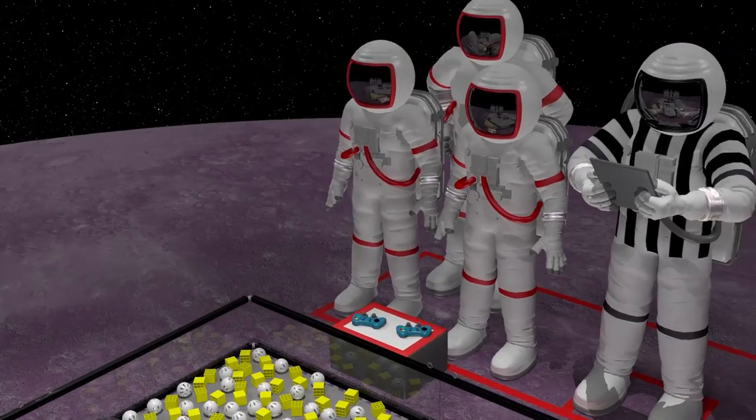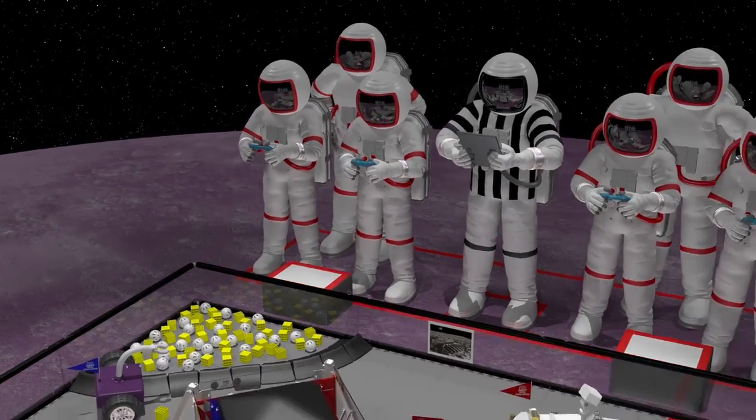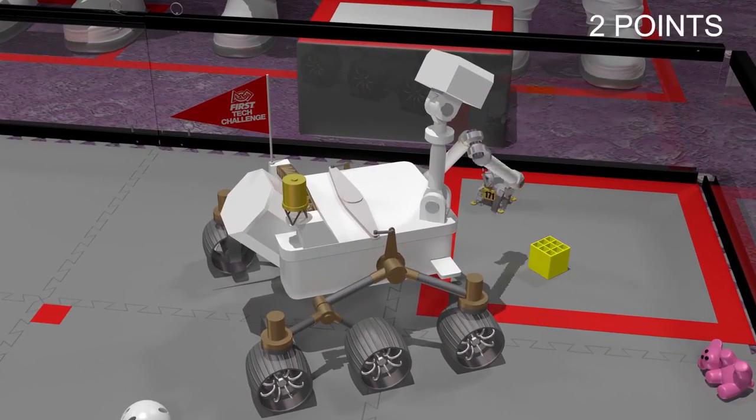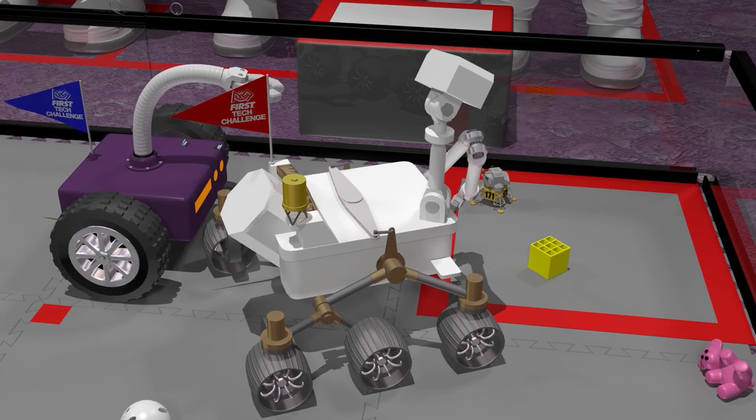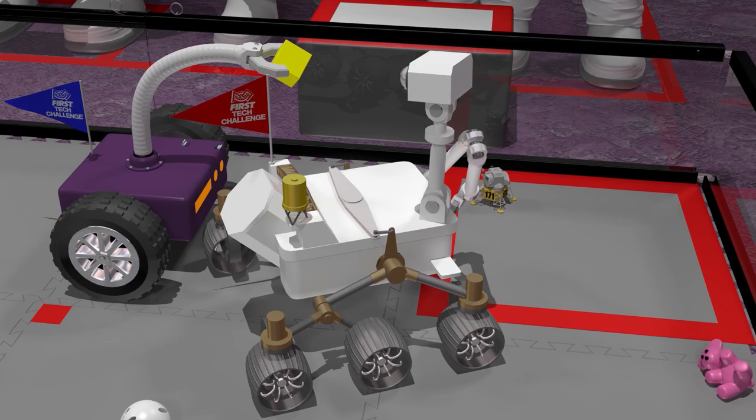Following the autonomous period is the two-minute driver-controlled period. There are a number of ways to score points. Each mineral placed into an alliance's depot earns two points. Be careful, however. If the depot is not completely claimed, an opposing alliance may descore your minerals.